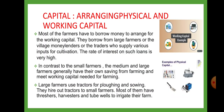Arranging physical and working capital: Most of the farmers have to borrow money to arrange for the working capital. They borrow from large farmers, the village money lenders, or the traders who supply various inputs for cultivation. The rate of interest on such loans is very high. In contrast, the medium and large farmers generally have their own savings from farming to meet the capital needed. Large farmers use tractors for ploughing and sowing, and hire out tractors to small farmers. Most of them have threshers, harvesters and tube wells to irrigate their farms.